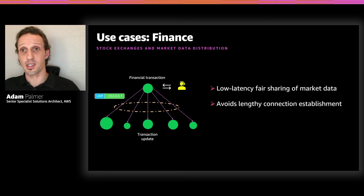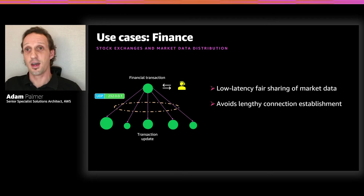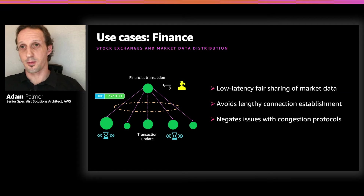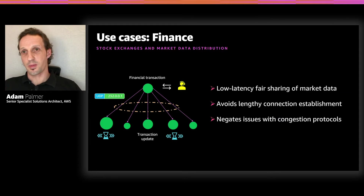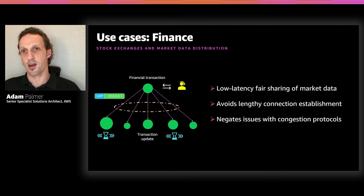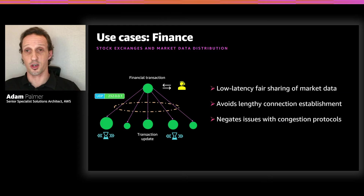If we were to use TCP, we would have to set up connections independently and send information as many times as there were unique destinations, adding to latency. Not using TCP also means we negate issues with congestion protocols. This is an environment where the speed and fairness in terms of latency of packet delivery is paramount, and where higher-level protocols and services often take care of the guarantee of packet delivery.